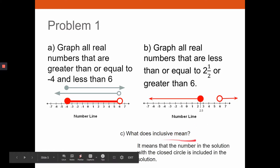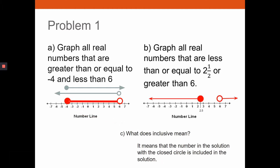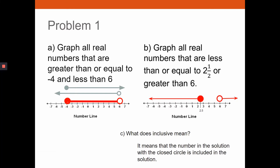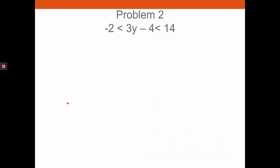What does 'inclusive' mean? It means the number at the closed circle is included in the solution set. For example, negative four with a closed circle is included in the solution set because both conditions are met at that point — so we keep it closed.